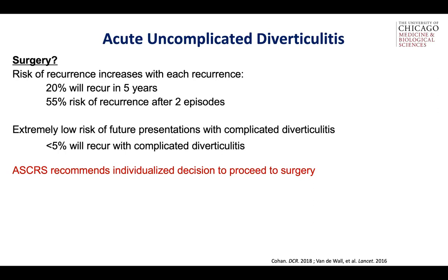For me, if the patient is 30 or 40 and maybe they've had 3 or 4 episodes, I generally offer them sigmoid resection, especially if they're taking time out of work and they're a good surgical risk. On the other hand, if they're older, have surgical comorbidities, and their episodes are well treated with antibiotics, I generally won't offer them surgery, or at least I won't push them to it — we would have a discussion about it.